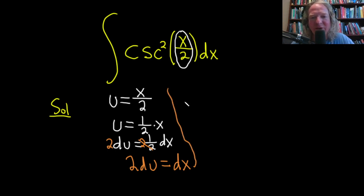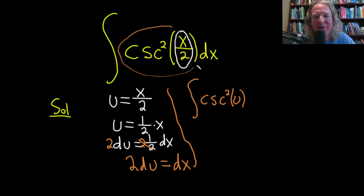Now let's go ahead and make the substitution. So we have the integral and we have the cosecant squared. So cosecant squared of u, because the inside piece is u. That takes care of all of this. And then as for the dx, that's right here, that's 2 du. So here's the du.